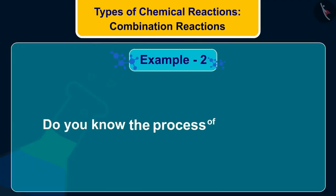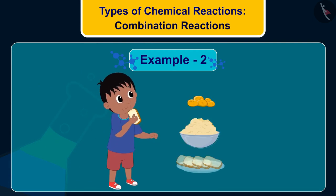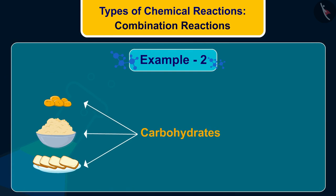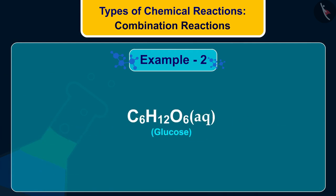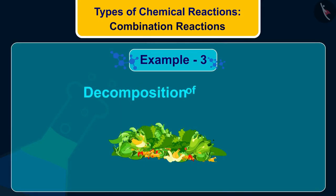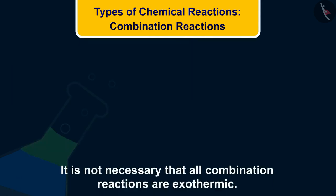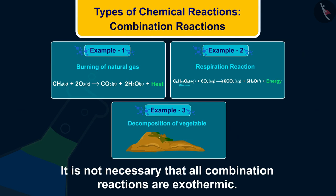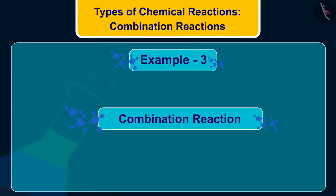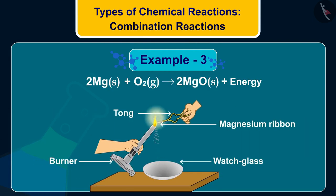Do you know the process of respiration is also an exothermic process? The food we consume — like potatoes, rice, bread — contains carbohydrates. These carbohydrates are broken down to form glucose, which is further broken down into carbon dioxide and water, releasing a large amount of energy. The decomposition of vegetable matter into compost is also an example of an exothermic reaction. Note that not all combination reactions are exothermic — for example, burning of magnesium ribbon, where magnesium burns in oxygen to produce magnesium oxide.